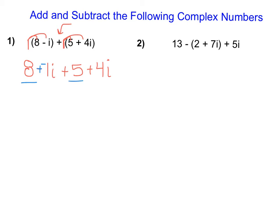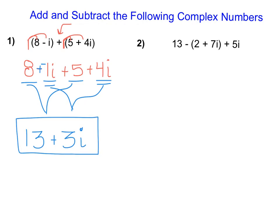So here I see that 8 and 5 are the real parts. So I'm going to combine those together to get 13. And then I have negative 1i and 4i which are the imaginary parts. And those combine together to be 3i. So my final answer here after I add those two complex numbers together is 13 plus 3i.